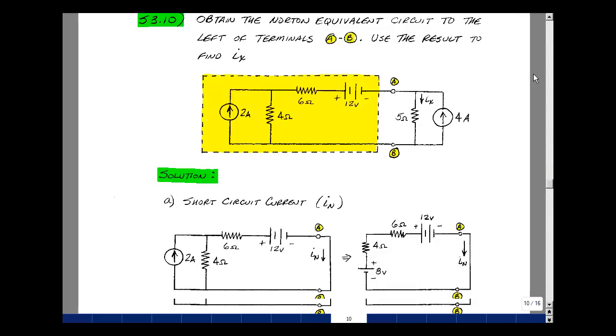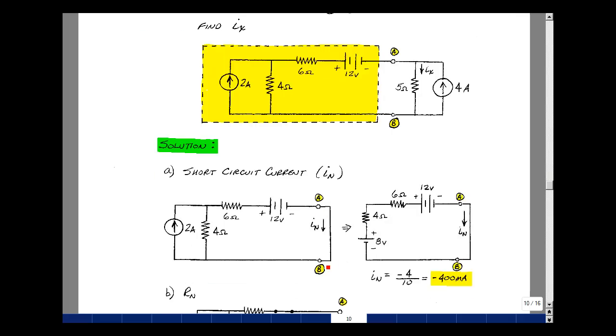Let's do the first step. Putting a short circuit between terminals A and B, removing the 5 ohm resistor and the 4 amp source. Let's find the current in the short circuit.